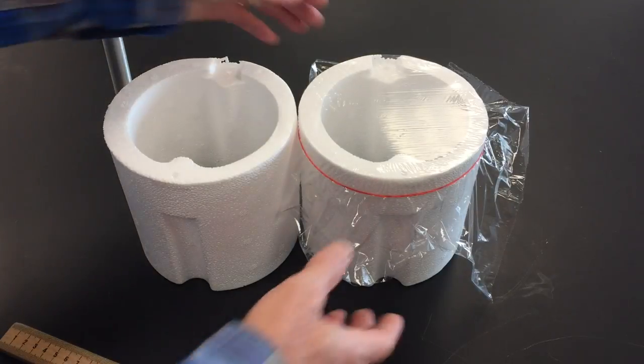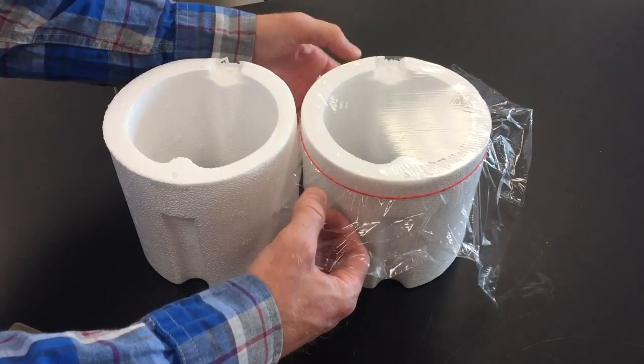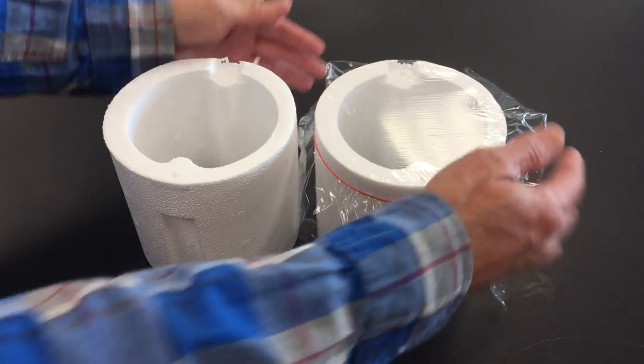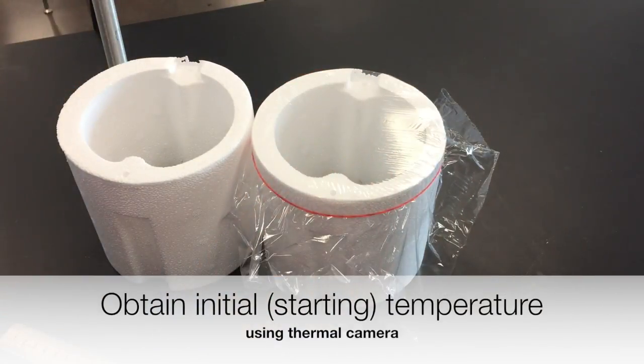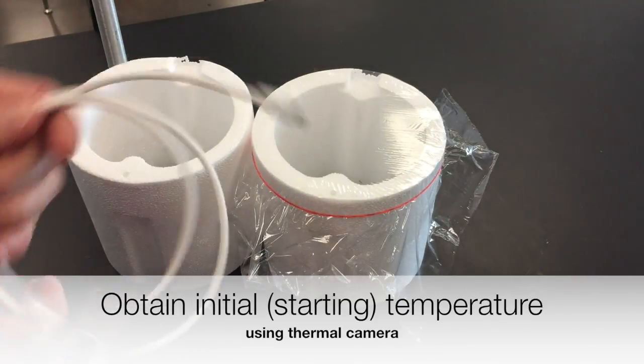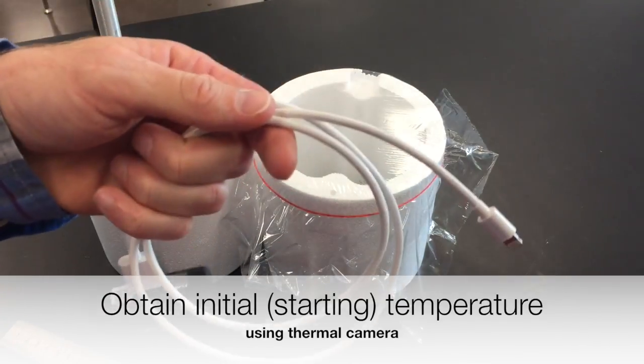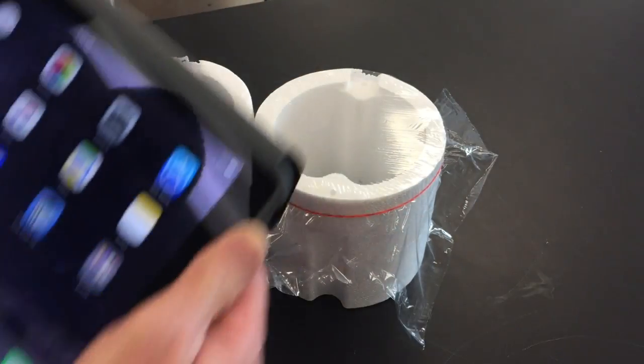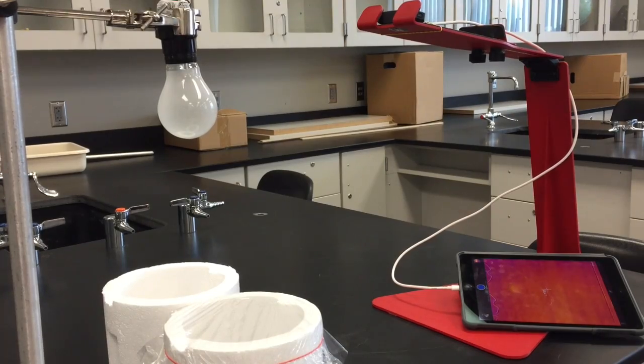All right, so before we run the experiment, what we want to do is we want to get the initial temperature which should be the same for both of them, but we're going to use our thermal camera for that. So go ahead and attach the thermal camera to your iPad and open the FLIR ONE app.